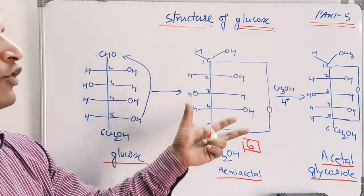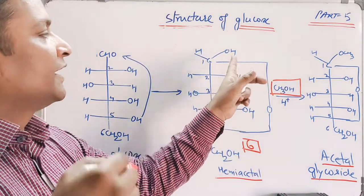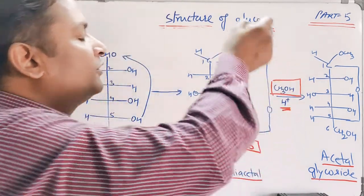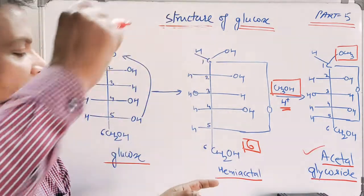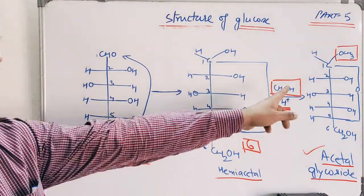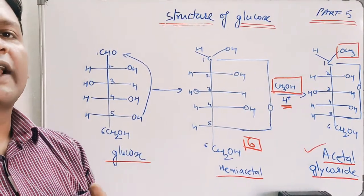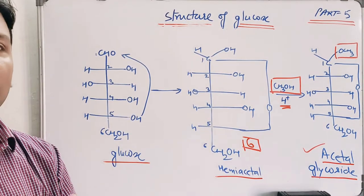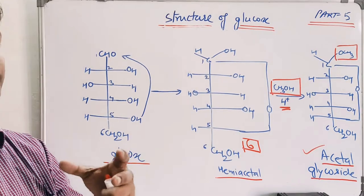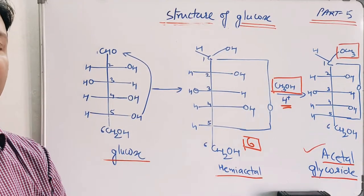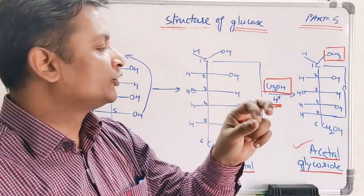It was proposed that glucose must be existing in this hemiacetal form, which is the reason why it was consuming only one mole of alcohol. When one mole of alcohol is treated with this hemiacetal in acidic medium — remember, the reaction occurs only in acidic medium — it gives an acetal. The acetal of glucose is called a glycoside. Glycoside is a general name given for all sugar molecules. If the glycoside is of glucose it is called glucoside; if of fructose, fructoside — these are specific names.